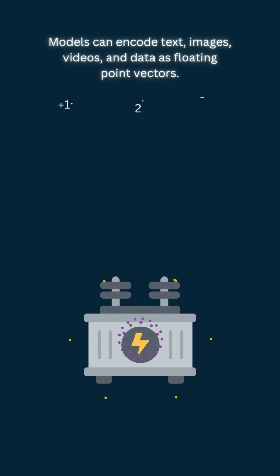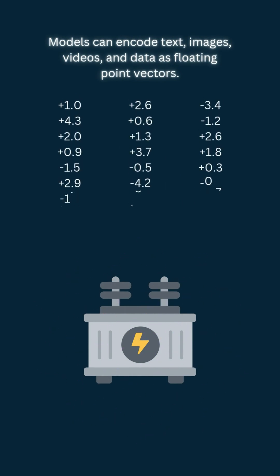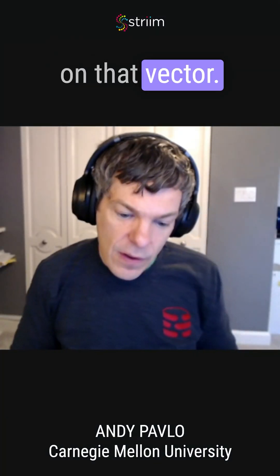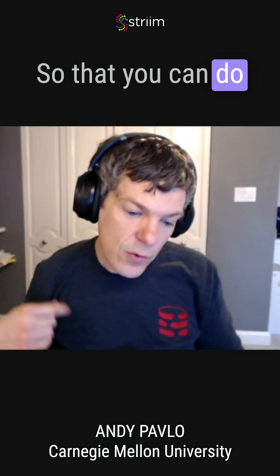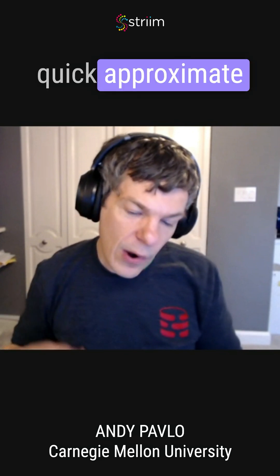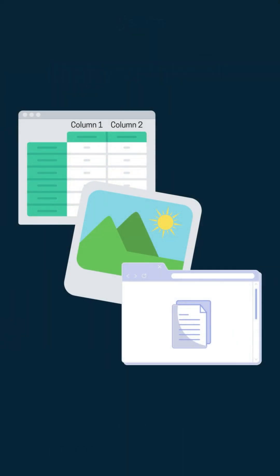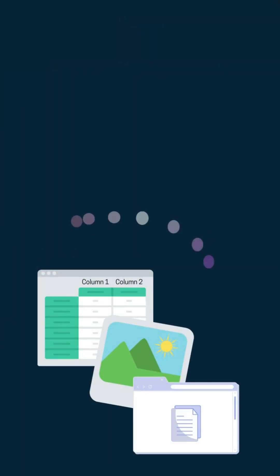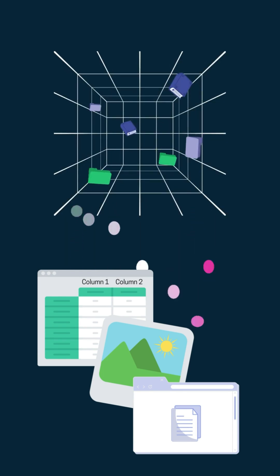And then you build an index on that vector so that you can do quick approximate nearest neighbor searches. The idea is that you take all your documents or all your data, you generate the vectors for them, and you load it up into this index.